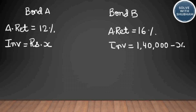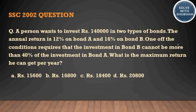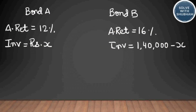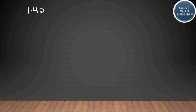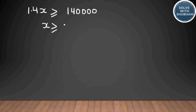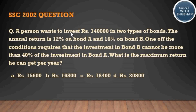Going back to the question, investment in bond B cannot be more than 40 percent of the investment in bond A. So investment in bond B is (1,40,000 − x) ≤ 0.4x, which gives 1.4x ≥ 1,40,000, so x ≥ 1,00,000. To maximize bond B, we minimize bond A to its minimum value of one lakh. What is the maximum return you can get per year?